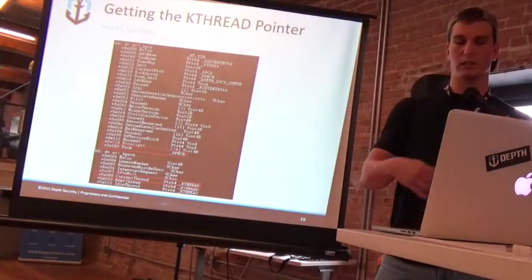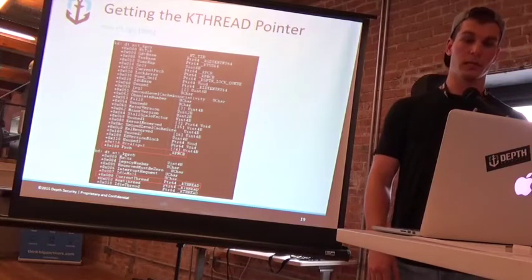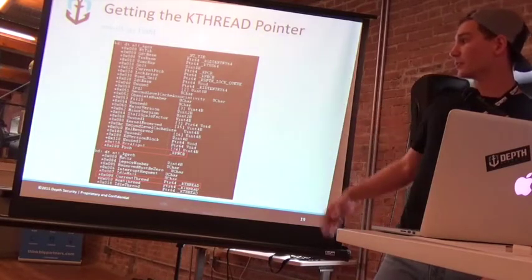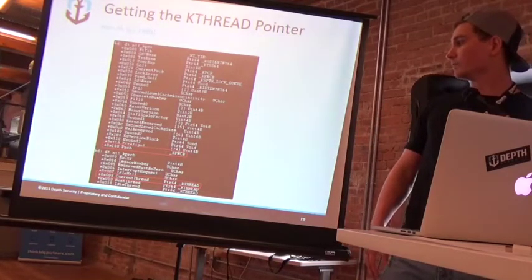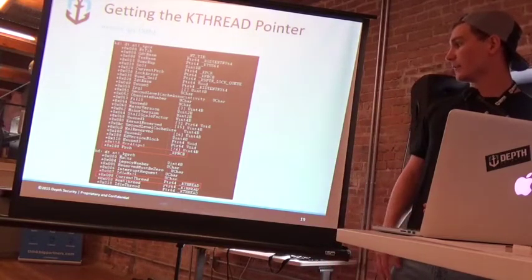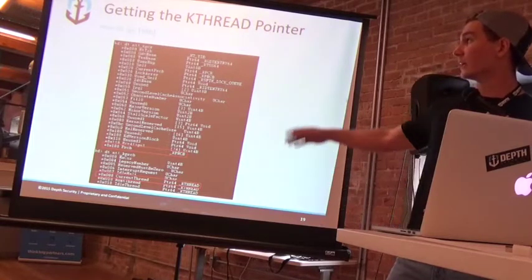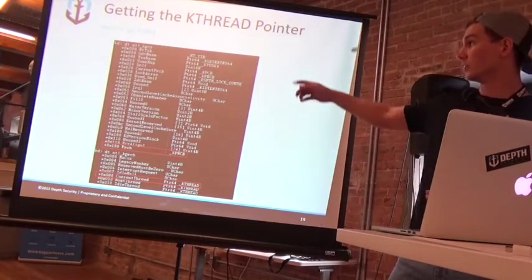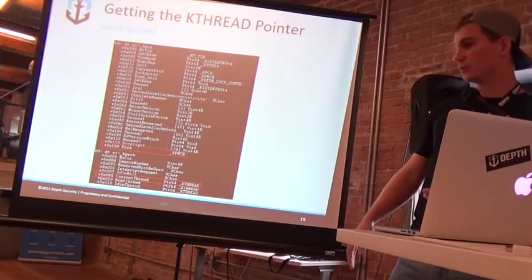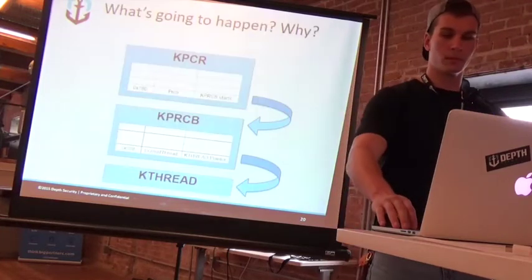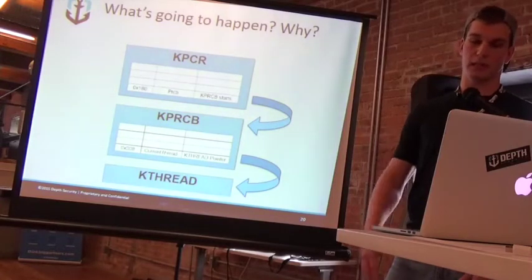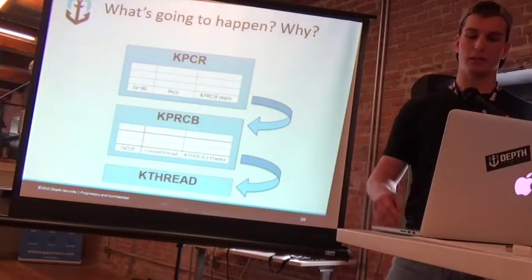This is output straight from a kernel debugger, just as you would see it. I'm dumping the structure of the KPCR. As I said earlier, the KPRCB is actually just an extension — at 0x180 hex the KPRCB actually starts. So we get the first instruction starting at GS:0, which is the KPCR. Then 0x188 hex down from that, we end up in current thread, which is a pointer to KTHREAD — that's what we're trying to get next. We're jumping from the KPCR, to the KPRCB, and then to KTHREAD.